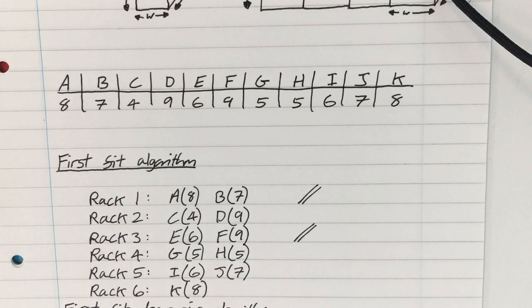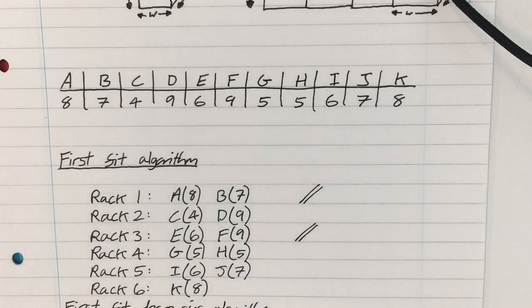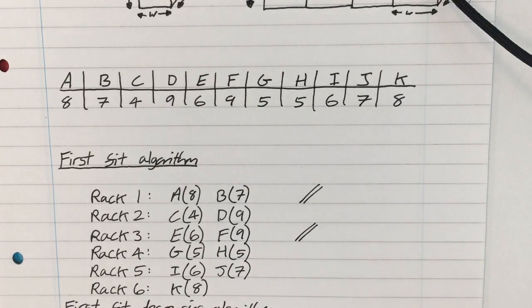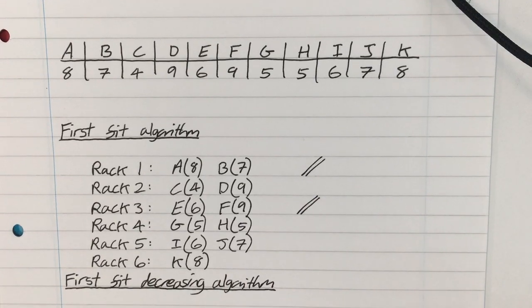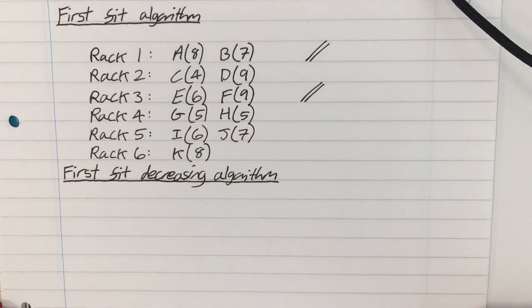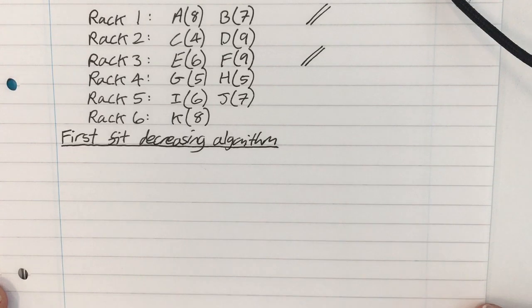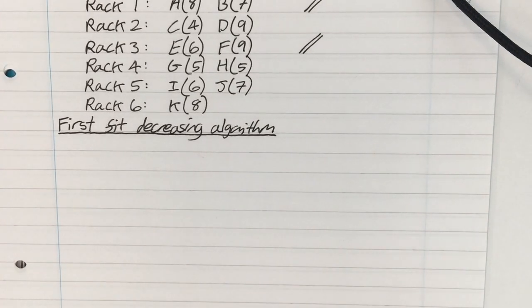To improve that algorithm, we could take the boxes and first of all put them in descending order of size. That actually improves the solution in a general case. And this is a different algorithm. It's called the first fit decreasing algorithm. It's exactly the same as the first fit algorithm, except you need to apply a sorting algorithm prior, such that the biggest box is first.